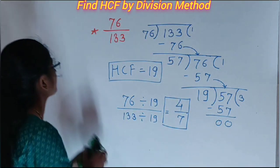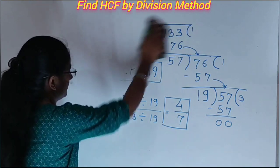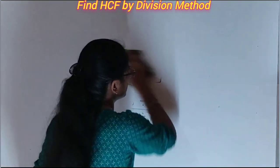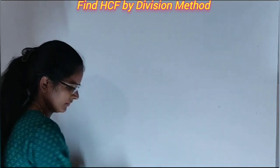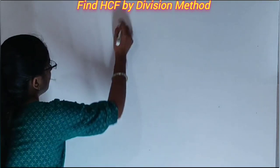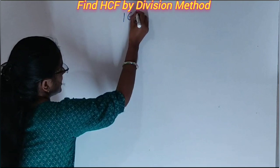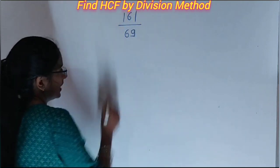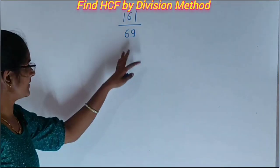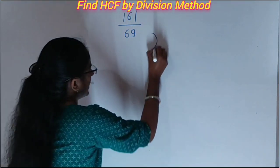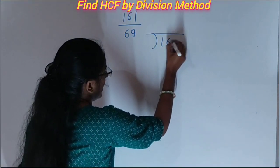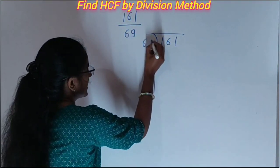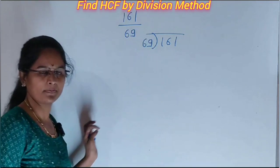Then next question. 161 divided by 69. Here same, write the bigger number here and divide this bigger number by the smaller number, which means 69.